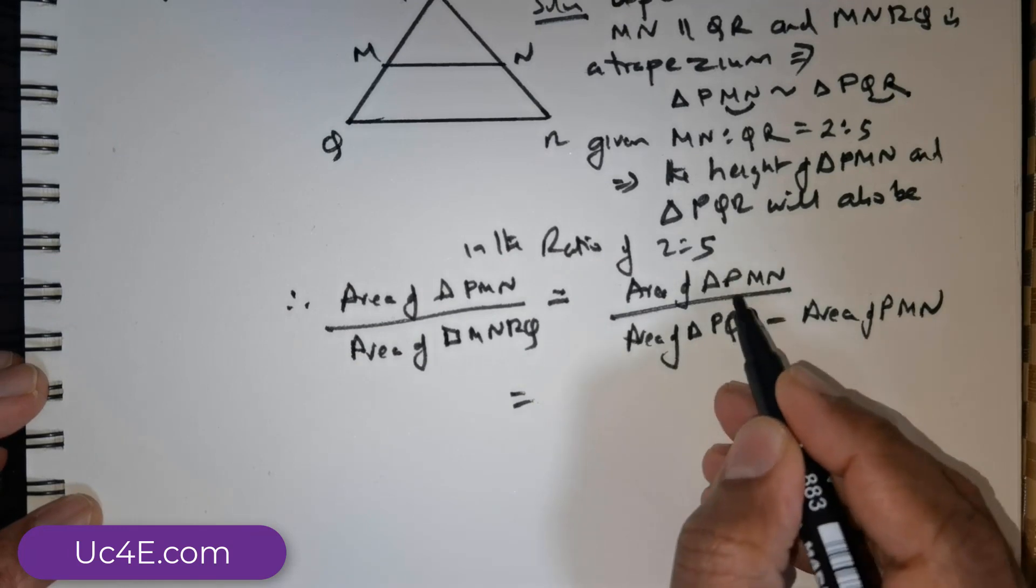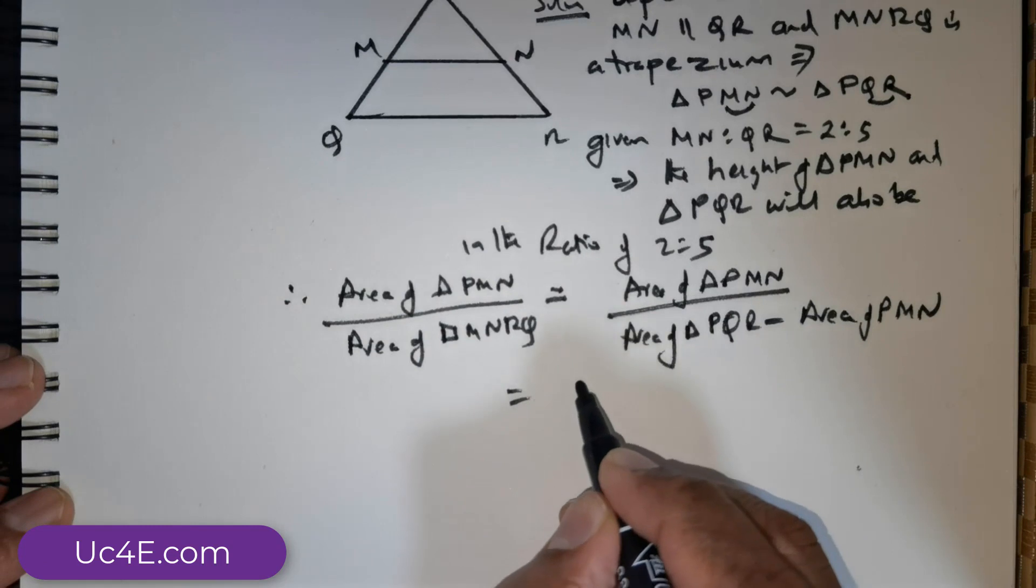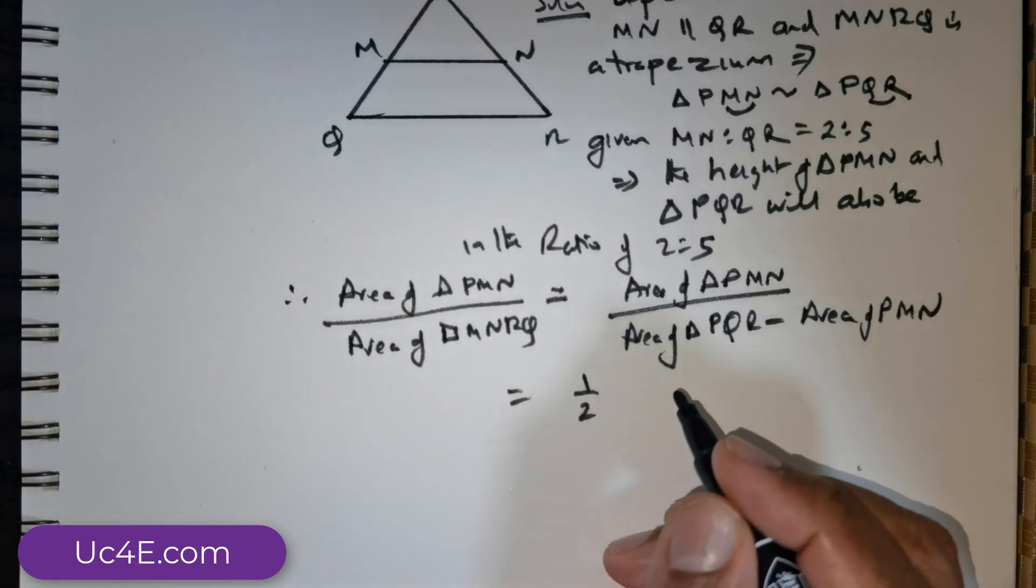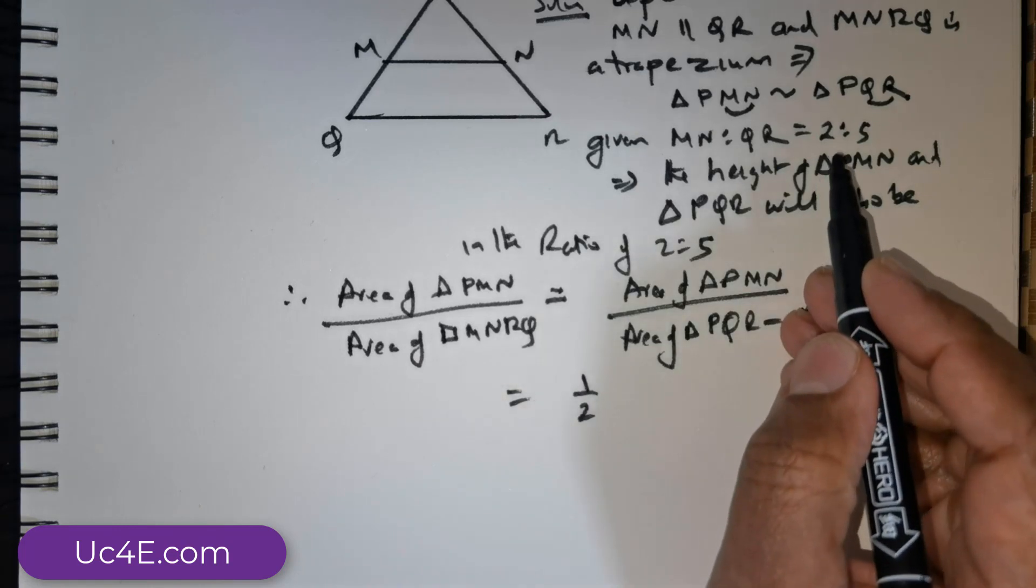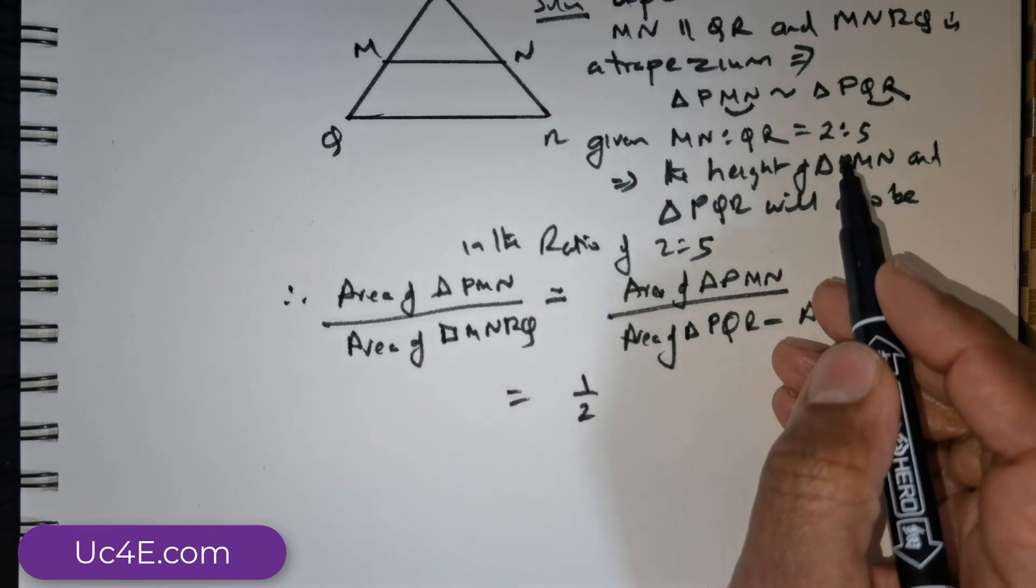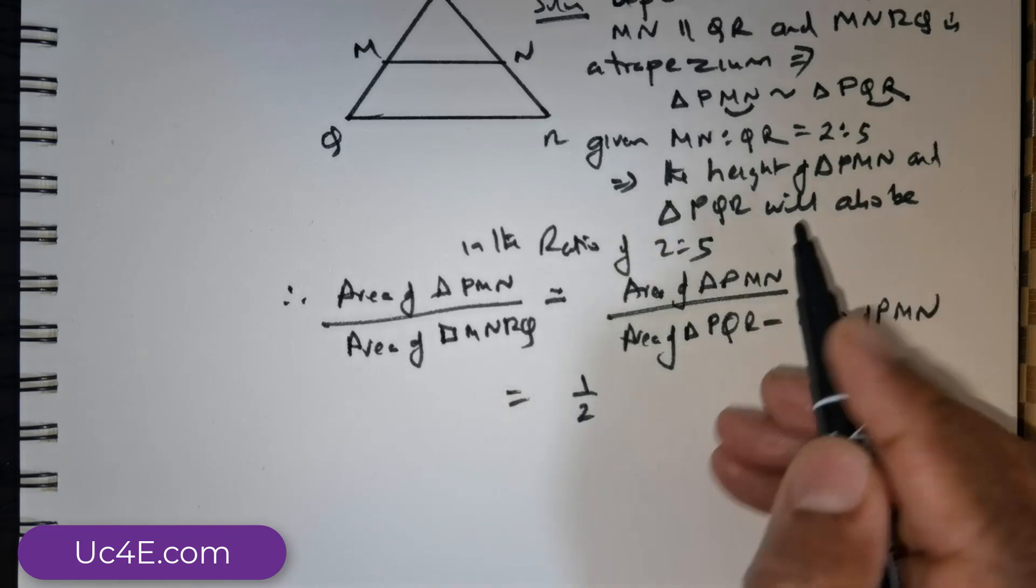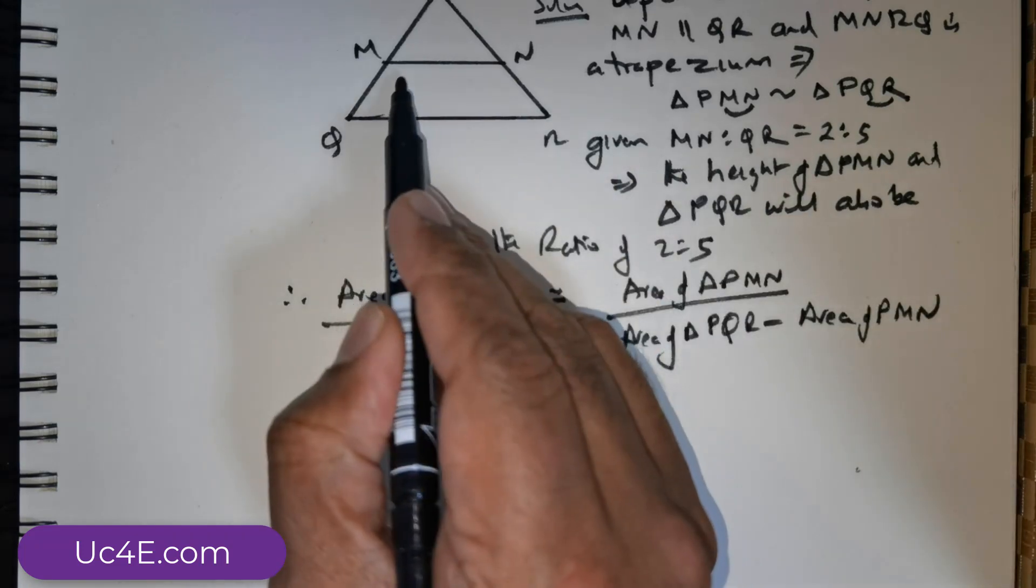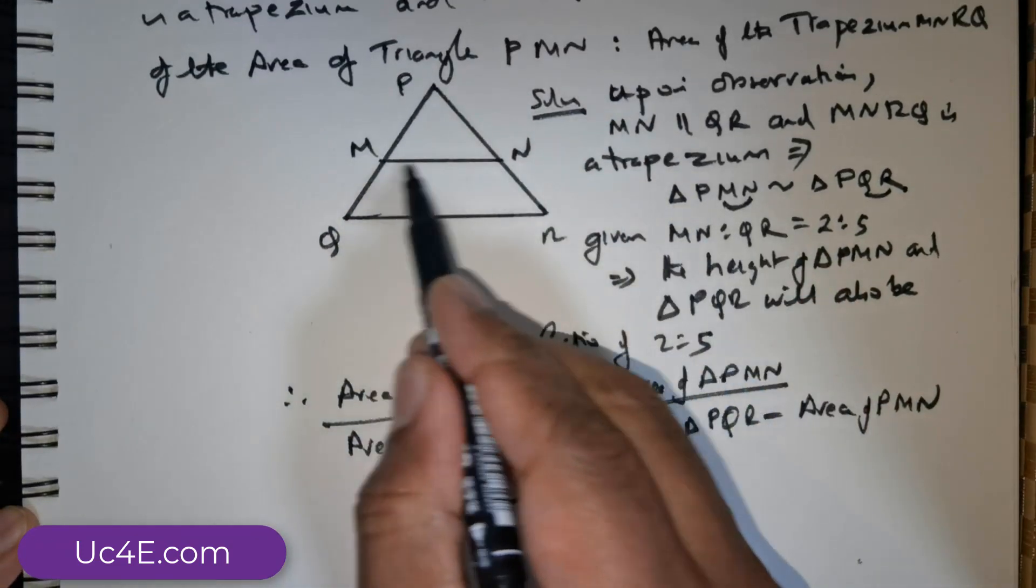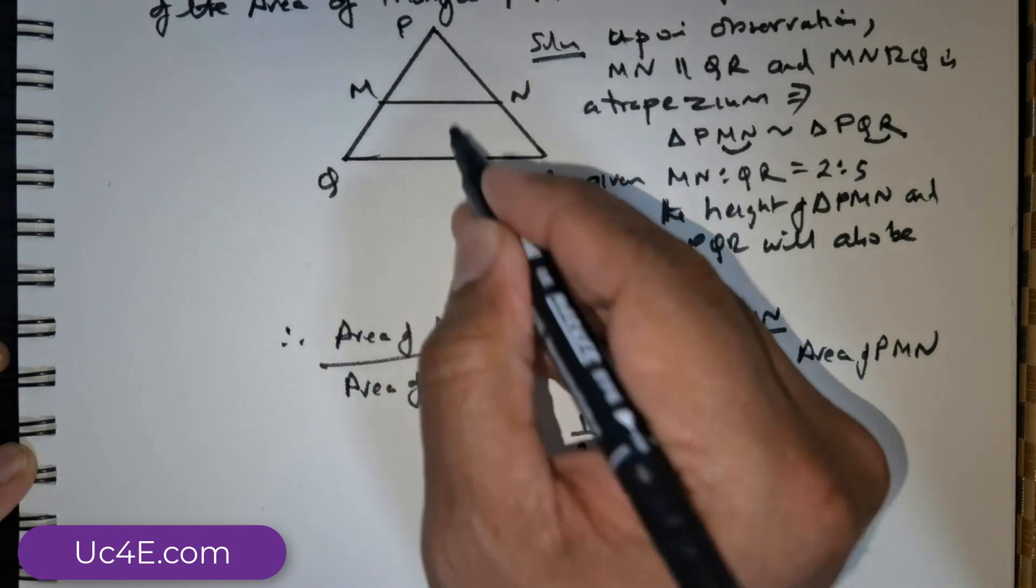So this is equal to area of PMN. So what is the area of PMN? That's nothing but half into base into height. So if my base is some X units, then this is going to be 2X units, right? Base into height. Because we have been given the ratio is 2 is to 5. So MN is the base here.